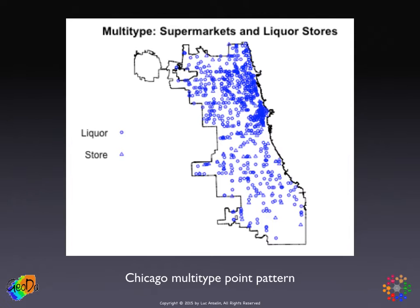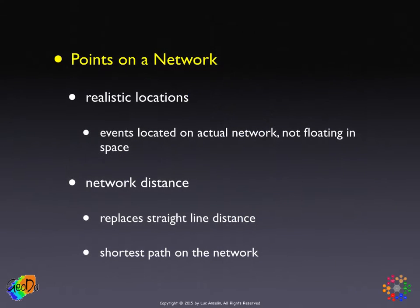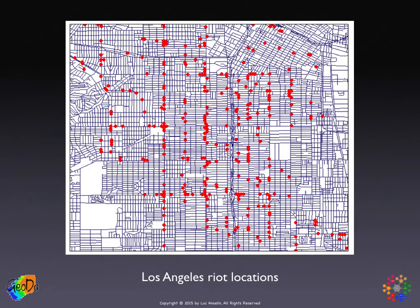So far we've seen points floating in space, but one of the early examples showed points — car thefts — on a network. This is a more recent development in the literature, where rather than working with straight-line distances on isotropic planes, events are located on an actual network — they are not floating in space. For example, there were major riots in Los Angeles in the early 1980s, so we could look at the locations of these riots on the street network of downtown Los Angeles. Similarly, we could look at the locations of IEDs in the street network of Baghdad.